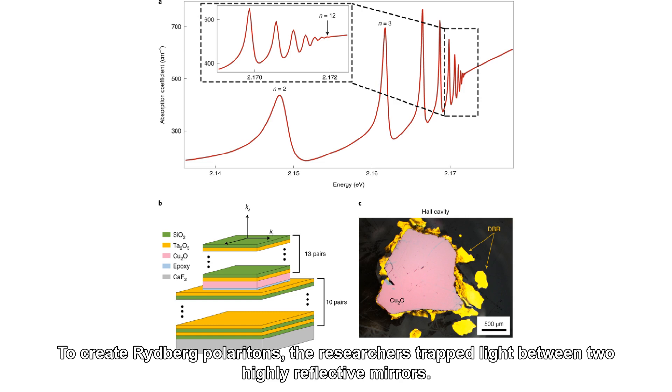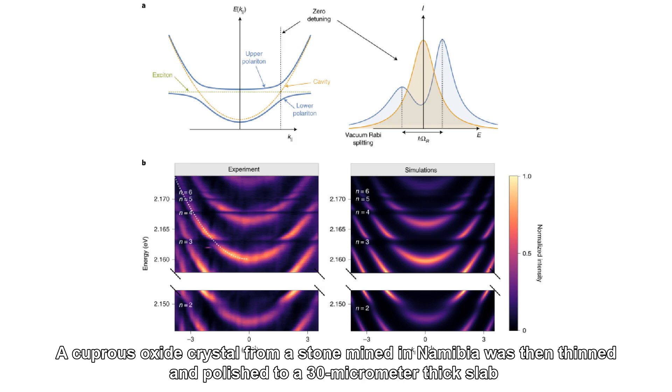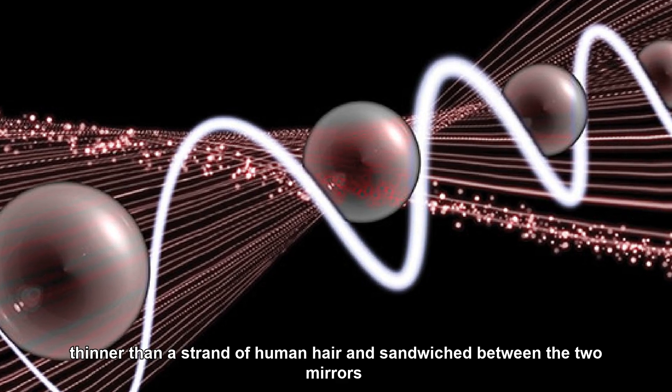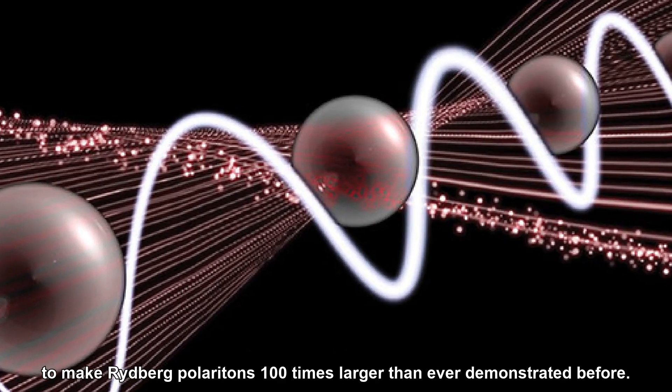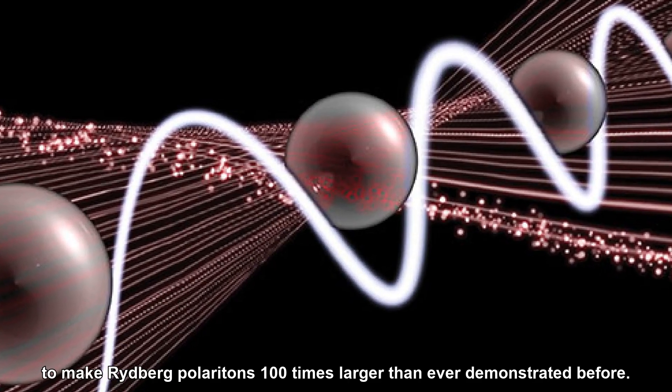To create Rydberg-Polaritons, the researchers trapped light between two highly reflective mirrors. A cuprous oxide crystal from a stone mined in Namibia was then thinned and polished to a 30-micrometer thick slab, thinner than a strand of human hair, and sandwiched between the two mirrors to make Rydberg-Polaritons 100 times larger than ever demonstrated before.